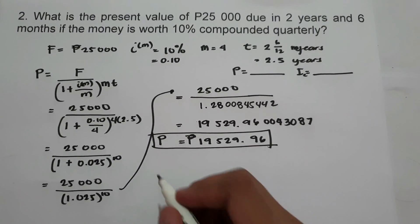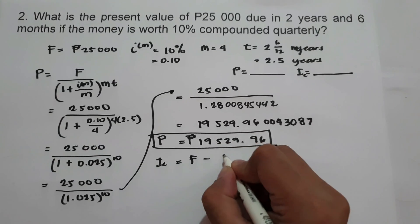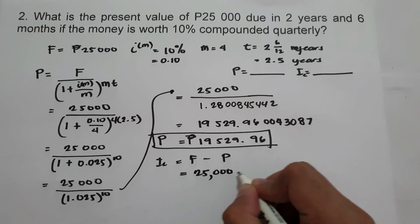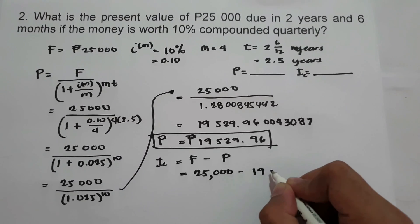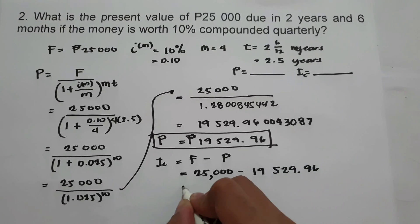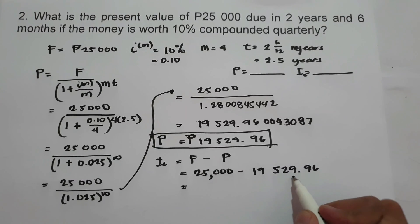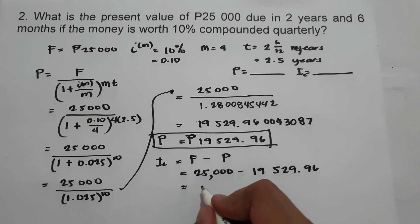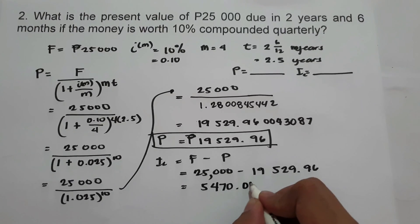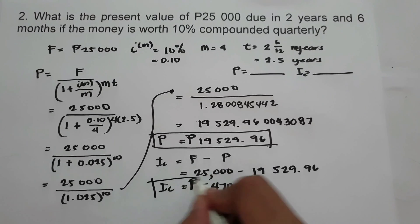To find the interest, we compute future value minus principal: 25,000 minus 19,529.96 equals 5,470.04. So this will be our answer.